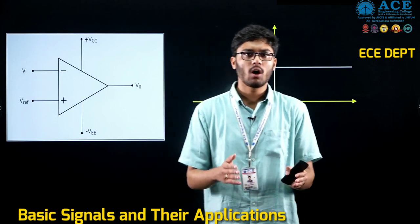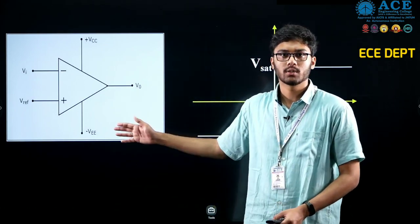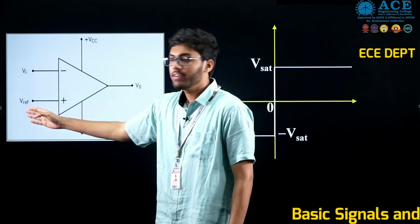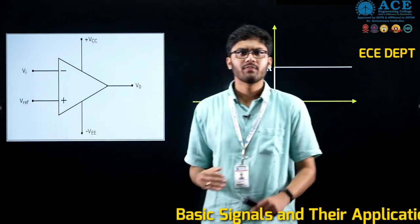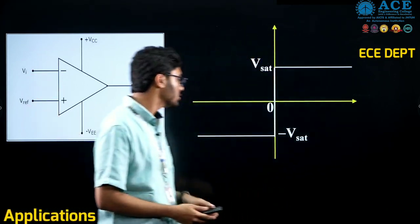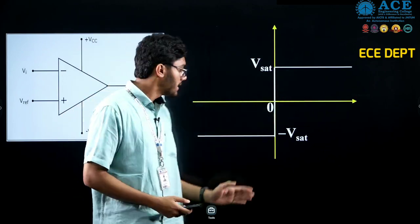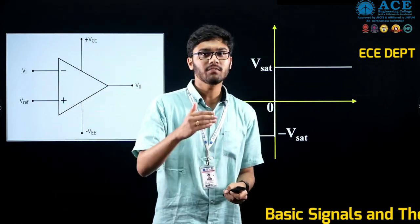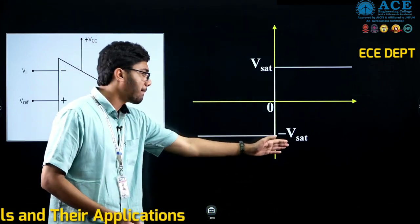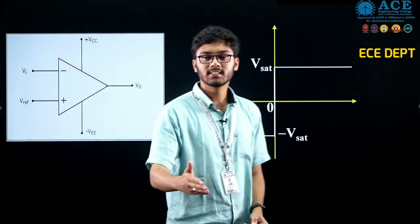The practical application of this signal is that it is used in a comparator circuit. As you can see, we have v-in and v-ref. If v-in is greater than the reference voltage, it produces a positive saturation value, that is plus 1. If v-in is less than v-ref, it produces minus 1 or a negative saturation signal.